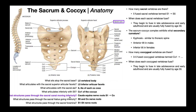The structures that move into the sacral canal are the nerve roots of the cauda equina belonging to S1 and below: S1, S2, S3, S4, S5, and coccygeal nerve roots. What structures pass through the sacral hiatus? Those are going to be only S5 and the coccygeal nerve roots.